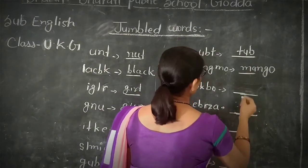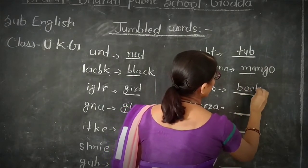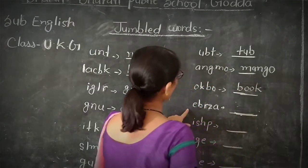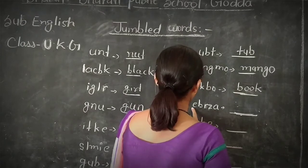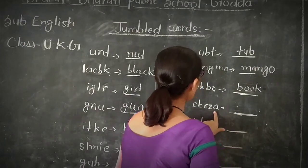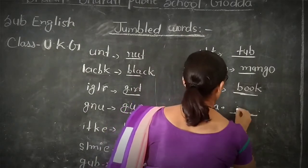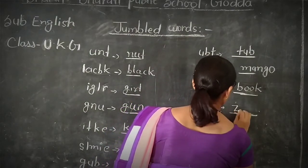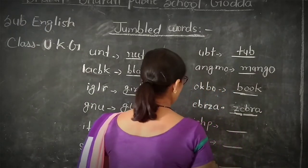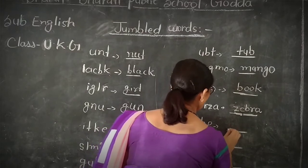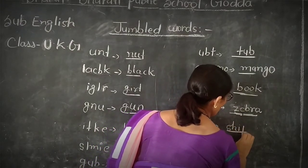Next word. E, B, R, J, A. This word is wrong, without meaning. We will write the correct word. First letter J, second letter B, A — JAR. Next word. S, H, I, P — SHIP.